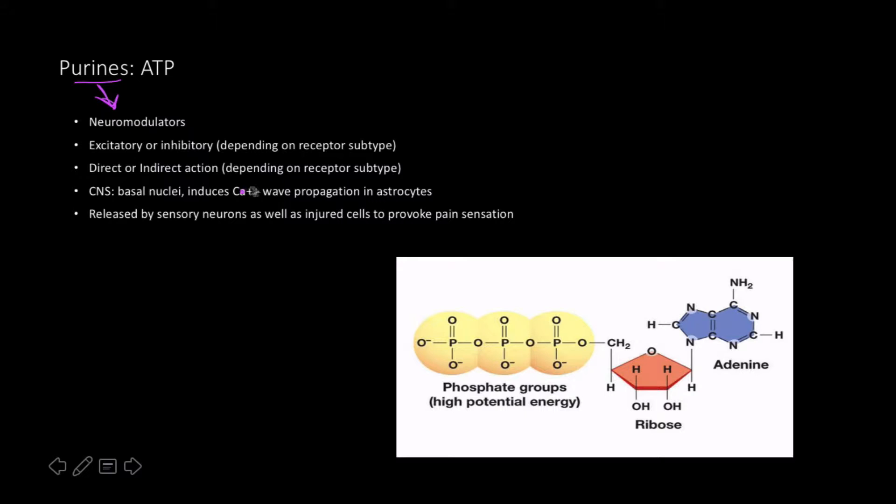It's found in the basal nuclei and induces calcium wave propagation in astrocytes. Hopefully by the end of my lifetime we'll know a lot more about astrocytes. It's also released by sensory neurons as well as injured cells to provoke a pain sensation, especially with injured cells.